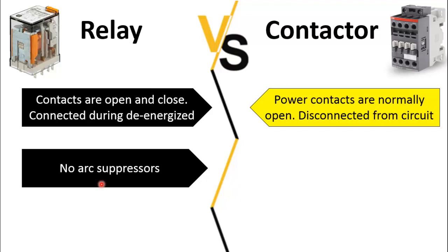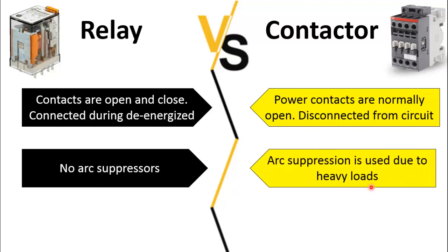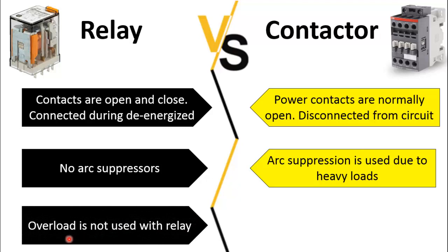Since the relay is used to switch a very light load, there are no arc suppressors in the relay. Whereas in the contactor, for heavy loads, the contactor has an arc suppression mechanism.